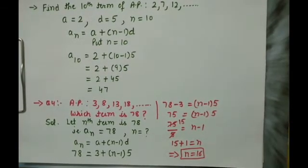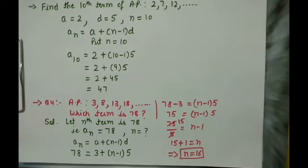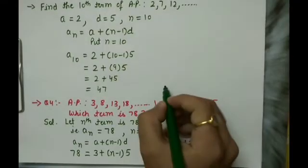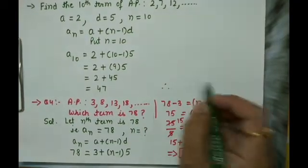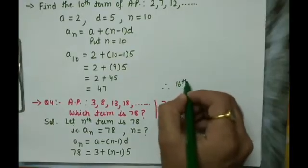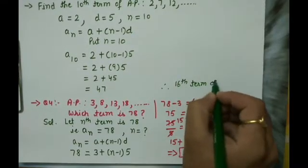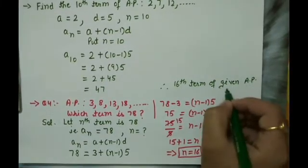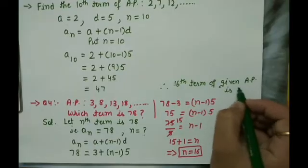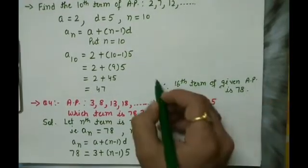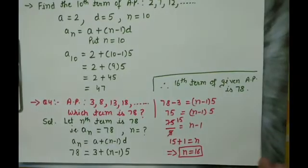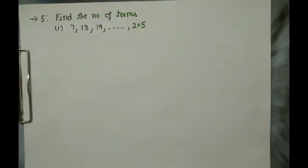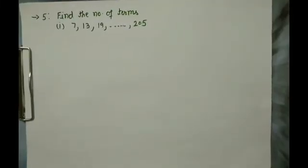This is the final answer, but in board exams you must write the conclusion clearly. Therefore, the 16th term of the given AP is 78. This last concluding line must always be written when attempting this type of question in an exam. Now let's move to question number 5.